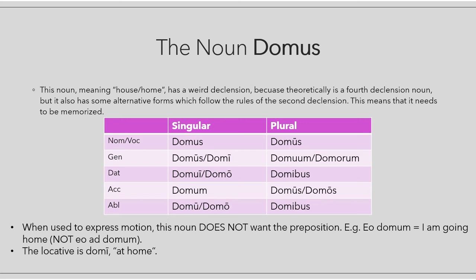For the singular: nominative and vocative are 'domus'; for the genitive you find either 'domus' (fourth declension) or 'domi' (second declension); dative 'domui' (fourth) or 'domo' (second); accusative 'domum'; ablative 'domu' (fourth) or 'domo' (second). For the plural: nominative and vocative are always 'domus'; genitive either 'domuum' (fourth) or 'domorum' (second); dative and ablative plural 'domibus'; accusative plural 'domus' (fourth) or 'domos' (second).